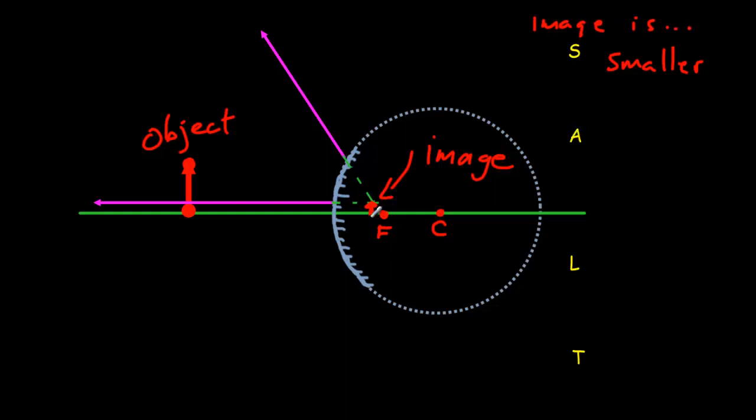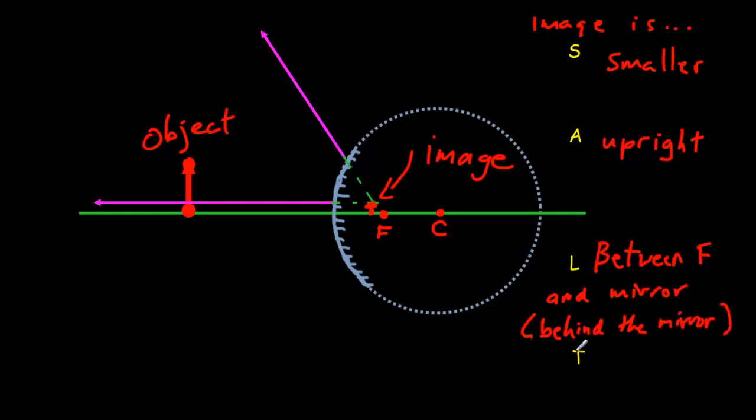Its attitude is upright. Its location is between F and the mirror, and note that it's behind the mirror. And the last one is type. Notice there's no real light back here, so that's not a real image, that is a virtual image. And that's a fully characterized image.